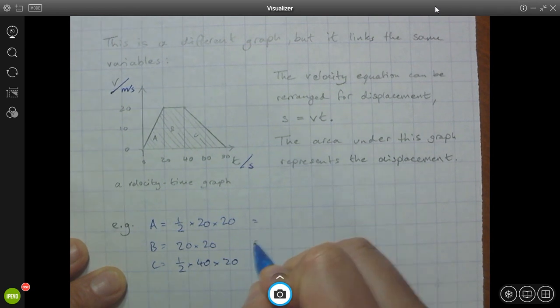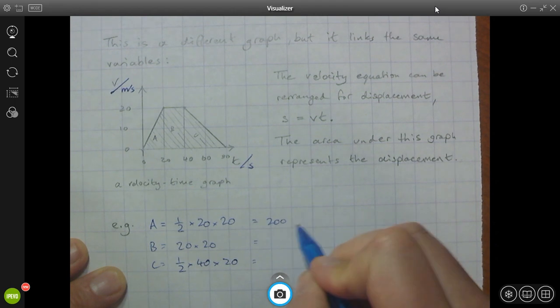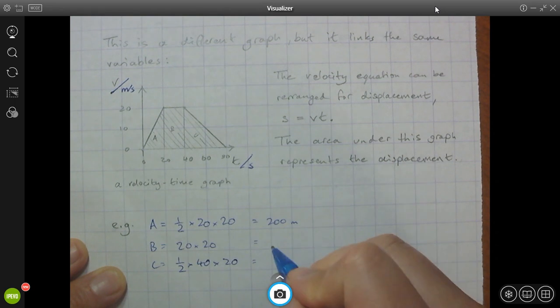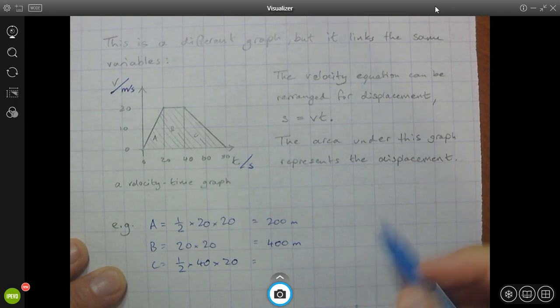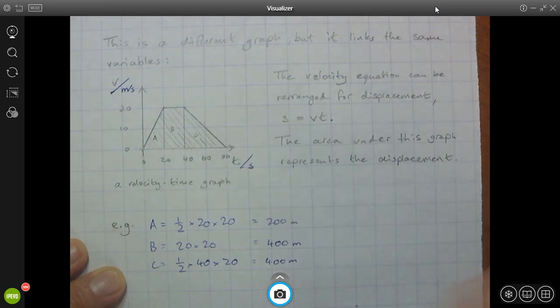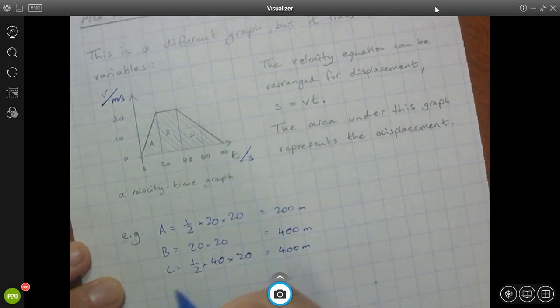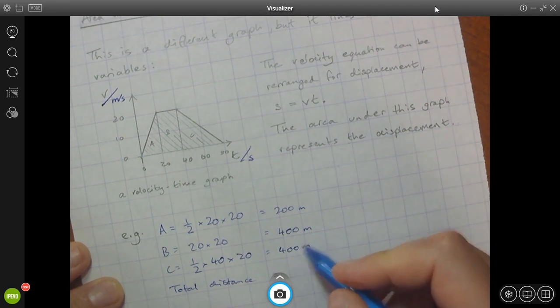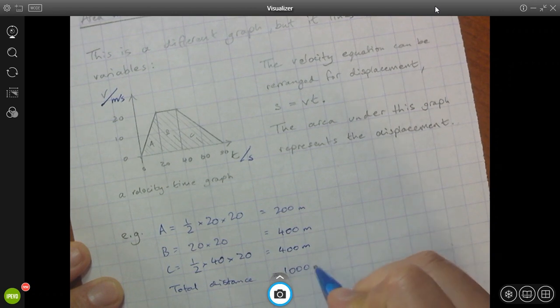And if we go through and calculate all of these, we've got 200 metres travelled in the first 20 seconds. And then we've got 400 metres travelled in the next 20 seconds. And then we've got 400 metres travelled in the final 40 seconds. And so the total distance that's been travelled, or the total displacement of the object, either way you look at it, is going to be 1,000 metres or 1 kilometre.